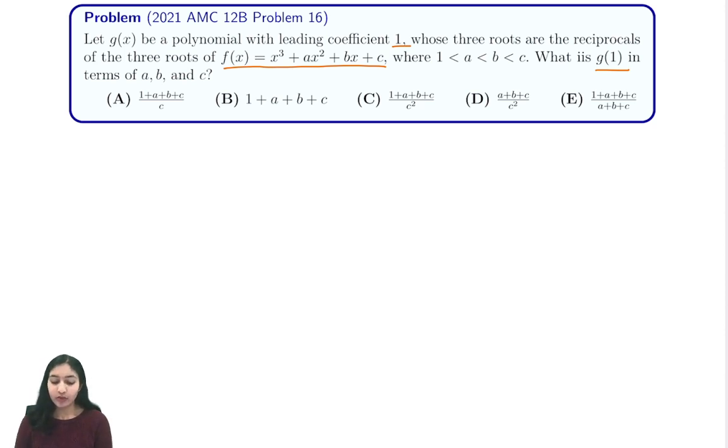So let's say the roots of f(x) are r, s, and t. By Vieta's, we know that r + s + t equals negative a. We also know that rs + rt + st equals b, and we know that rst equals negative c.